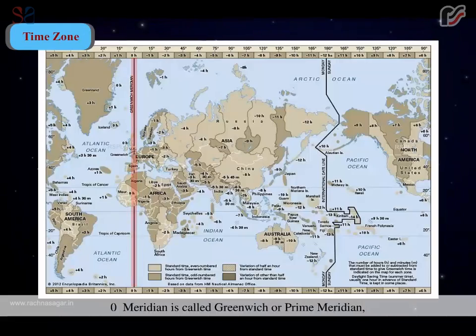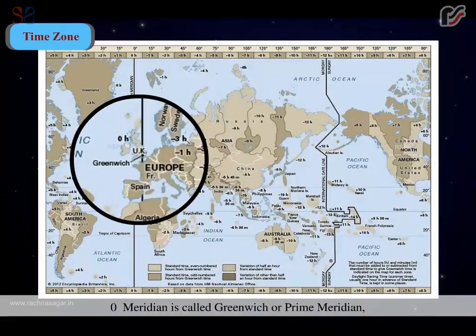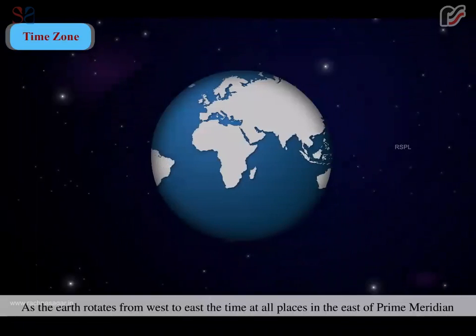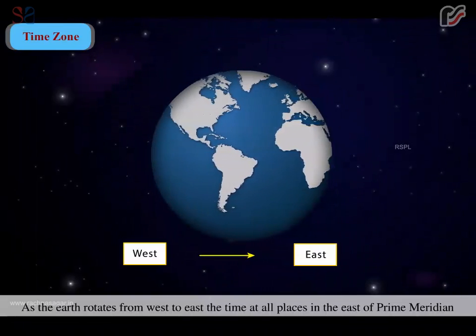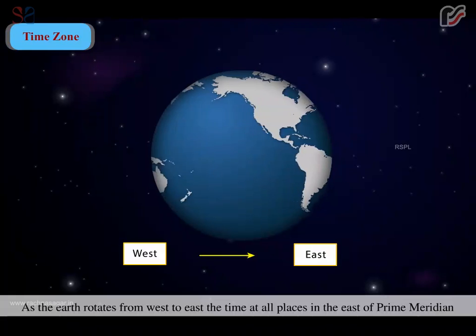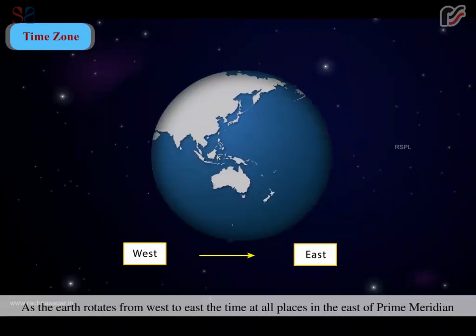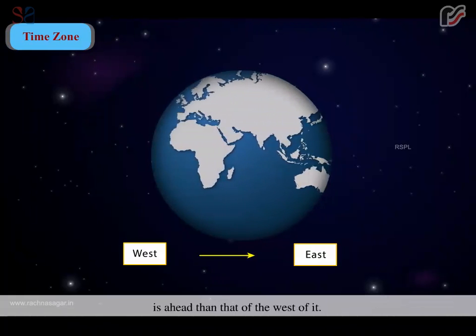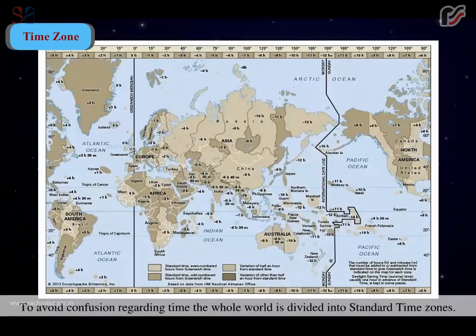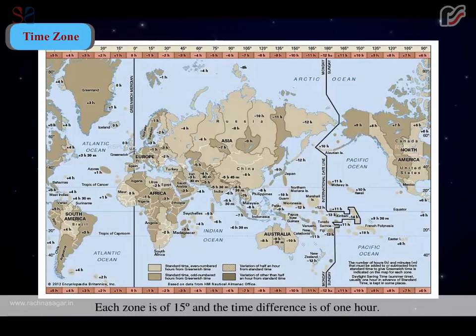Zero degree meridian is called the Greenwich or Prime Meridian, as it passes through the Royal Observatory at Greenwich near London in the UK. As the earth rotates from west to east, the time at all places to the east of the Prime Meridian is ahead of those to the west. To avoid confusion regarding time, the whole world is divided into standard time zones. Each zone is of 15 degrees and the time difference is of 1 hour.